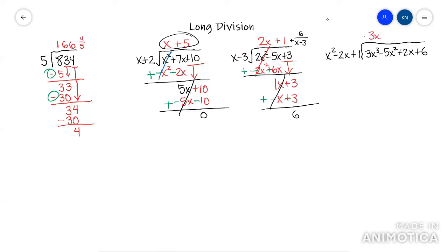This one's different because I have to distribute to three different things here. So distribute that 3X everything, you would get 3X cubed minus 6X squared plus 3X.